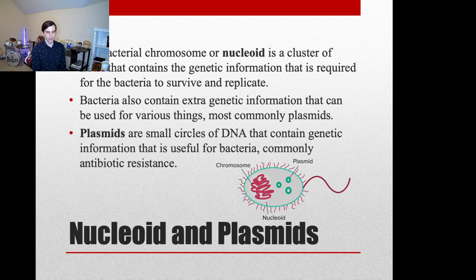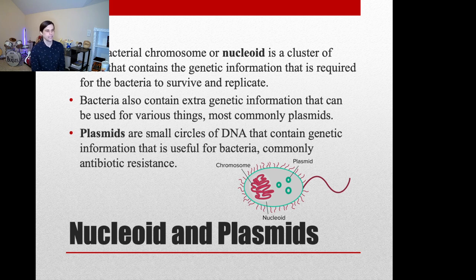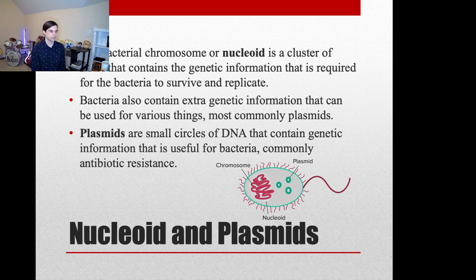I've talked a little about bacterial nucleoids — the big cluster of DNA in the middle of the cell, one giant long circle, sometimes called the bacterial chromosome, with no surrounding nuclear membrane. Plasmids are another genetic element found in bacteria. They are tiny circular pieces of DNA that exist independently of the bacterial chromosome. The bacteria doesn't need them to survive and function, but if it has them, they allow it to do some interesting things.